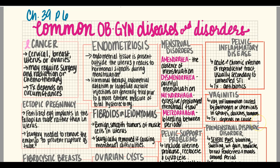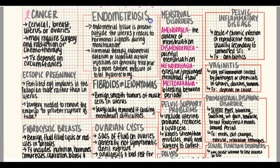Vaginitis can also result from tampon use or not changing tampons frequently enough. The FDA has ruled that certain chemicals can no longer be included in tampon cotton, which has reduced some cases. There are many ways a woman can develop vaginitis.